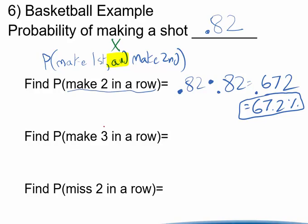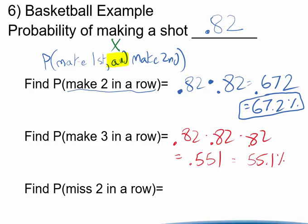And as you might guess, the common mistake here is people put 0.82 times 3, but this is going to be 0.82 times itself 3 times. 0.82 times 0.82 times 0.82. And if we take 0.82 times itself 3 times, we're going to end up with about 0.551, which is a 55.1% chance.